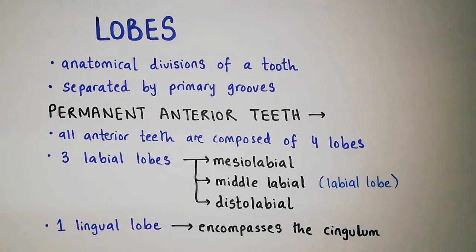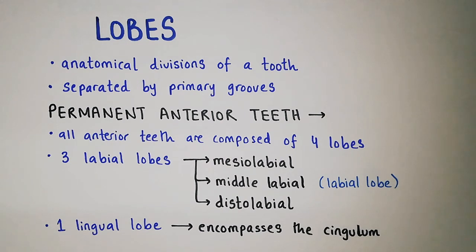Today we are going to talk about lobes, contact area and height of contour. First let's come to lobes. Lobes are the anatomical divisions of a tooth; they are separated by primary grooves.